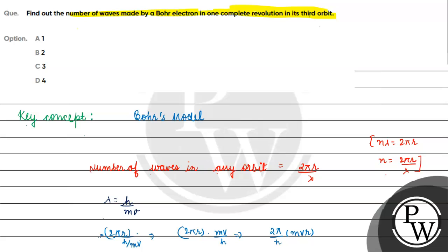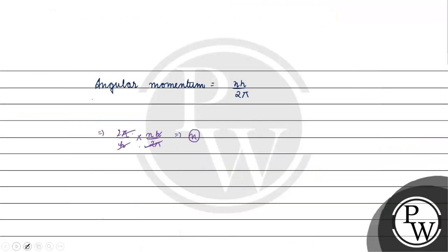And what is n? We have given there in third orbit. The third orbit.